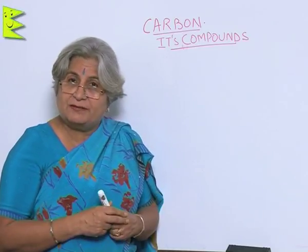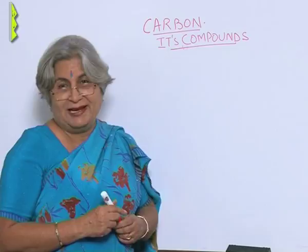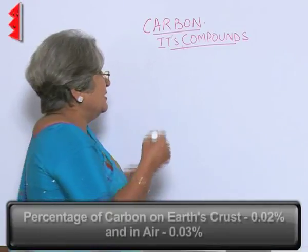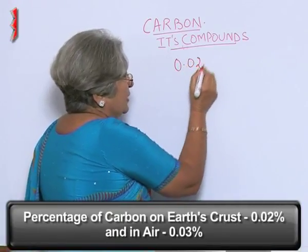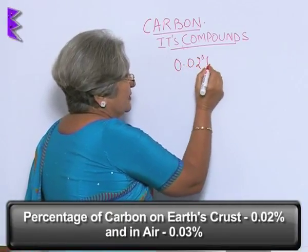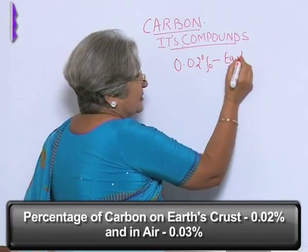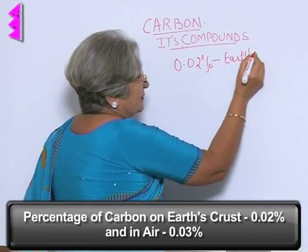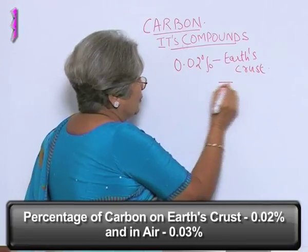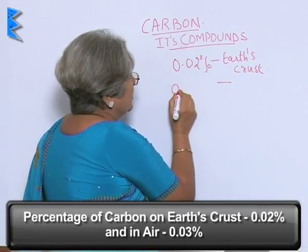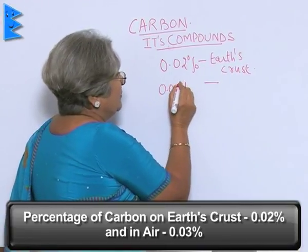So there must be a lot of carbon available — but not really. On Earth's crust there is only 0.02 percent, and in air, as you must know, 0.03 percent.